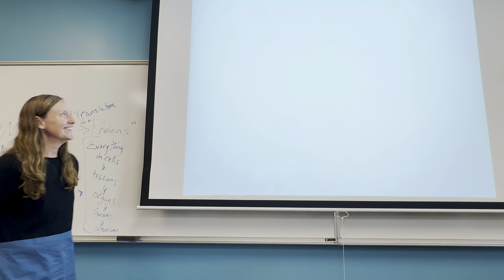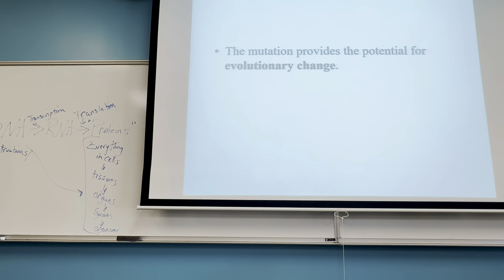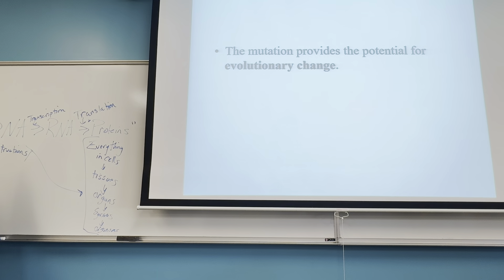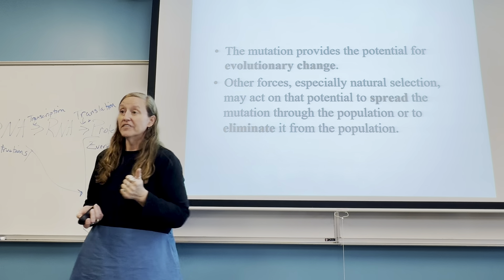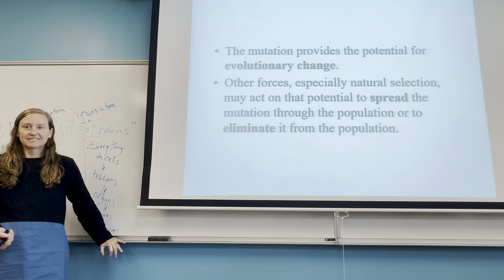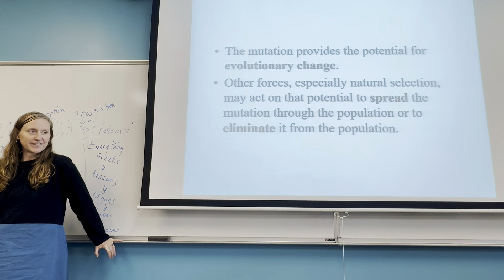Mutations are very important for evolutionary change. They provide different traits, different alleles, and different characteristics. It's totally by chance that the environment changes and mutations may or may not match up to be beneficial. Sometimes they do, and sometimes they don't. When enough traits aren't beneficial given an environmental change, species can die off, go extinct, level off at a lower carrying capacity, or experience harsher environmental resistance. But mutations can also allow species to survive more easily.